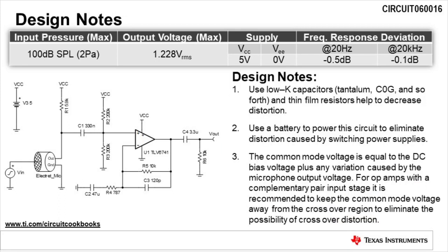When designing non-inverting microphone preamplifier circuits, there are a few design notes to be aware of. First, be sure to use low K capacitors and thin film resistors to help decrease distortion. Next, be sure to use a battery to power the circuit to eliminate distortion caused by switching power supplies. Finally, the common mode voltage is equal to the DC bias voltage set using the resistor divider, plus any variation caused by the microphone output voltage. For op amps with a complementary pair input stage, it's recommended to keep the common mode voltage away from the crossover region to eliminate the possibility of crossover distortion.